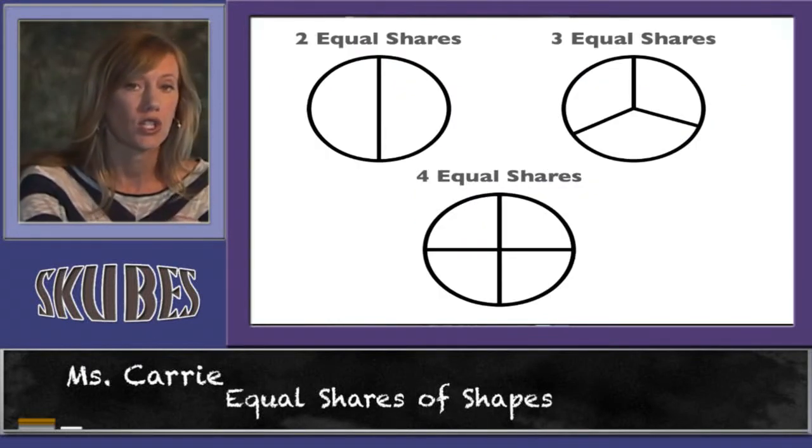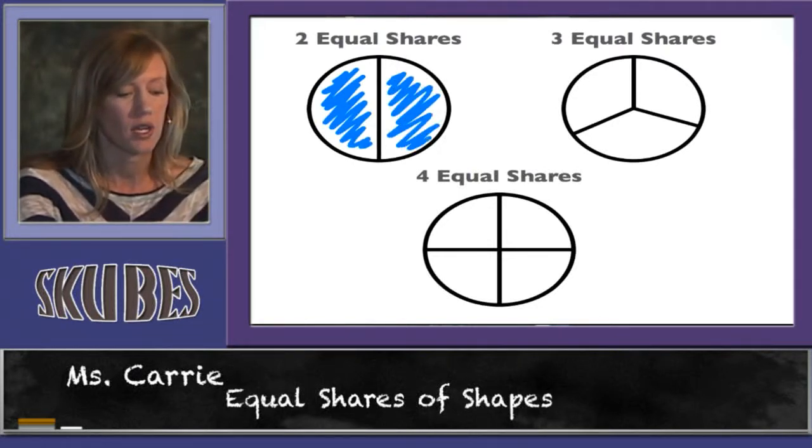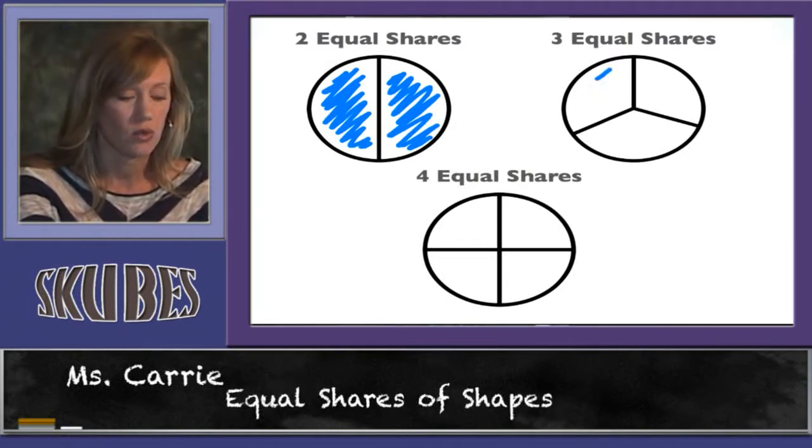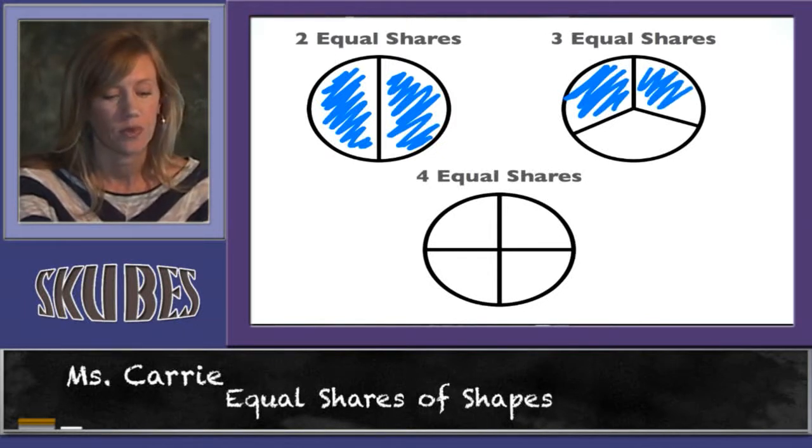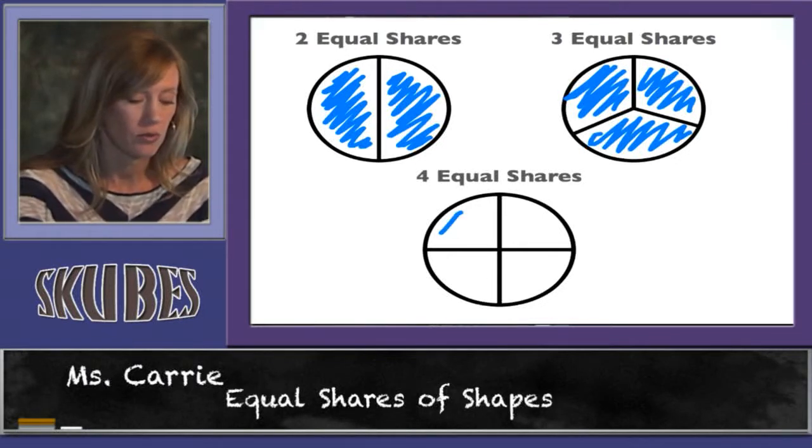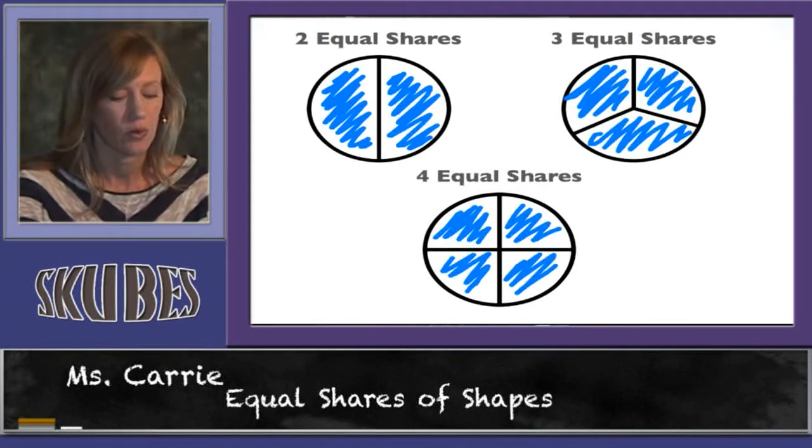So we can divide shapes into two equal shares. Here's a share here. Here's a share on the other side. We can divide shapes into three equal shares. There's one. There's another. And there's another. And we can divide shapes into four equal shares. One, two, three, four.